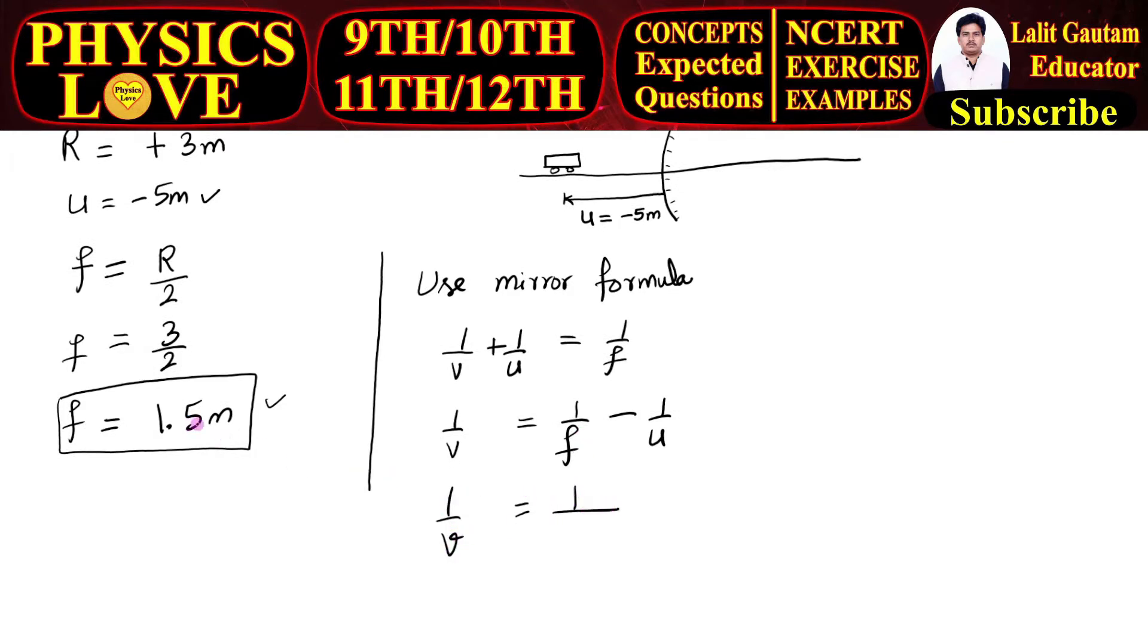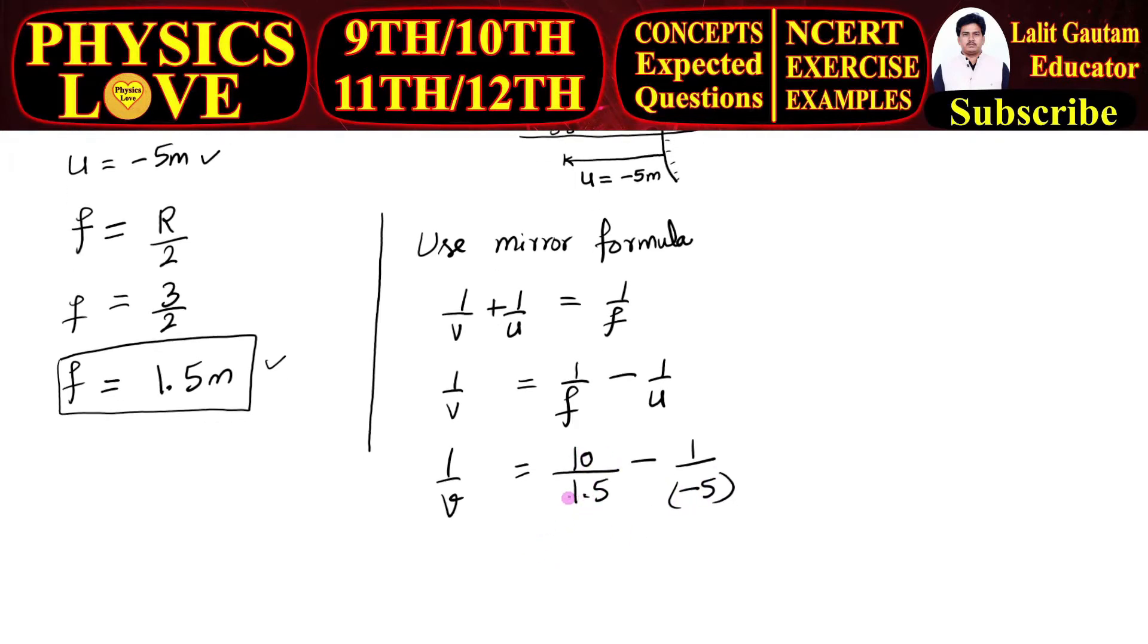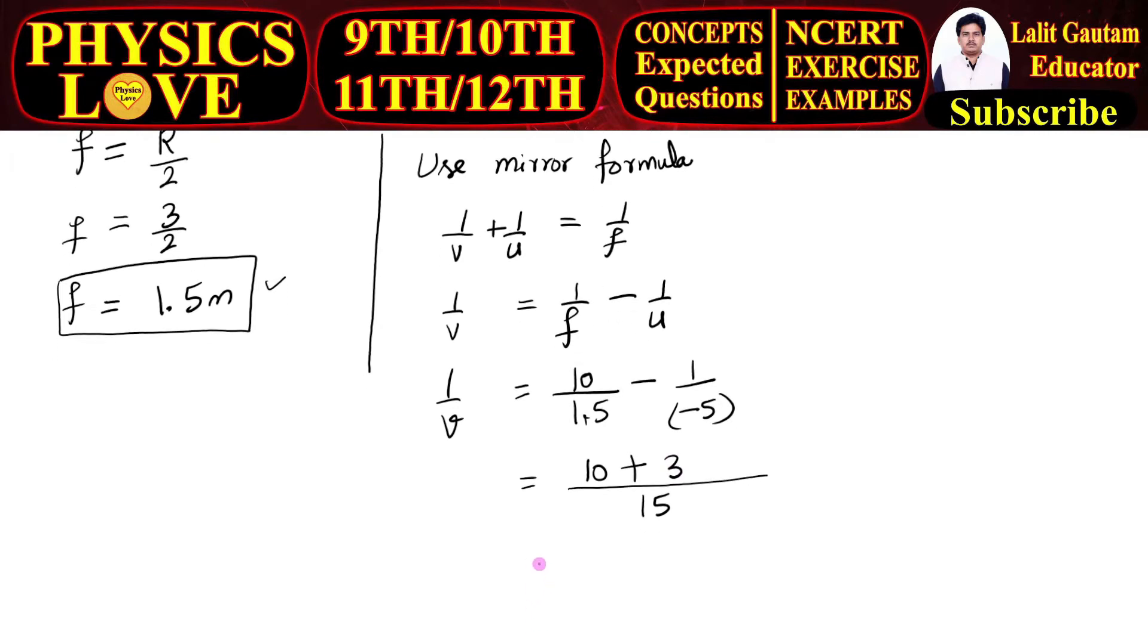Now 1 by v is equal to 1 by f, and focal length is 1.5 meter, minus 1 by u and u is minus 5 meter. Now remove this decimal and there is 10 in numerator. Take the LCM, the LCM will be 15. Now it is 10 minus minus, plus, and 5 times 3 is 15.